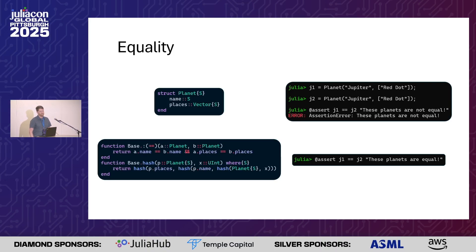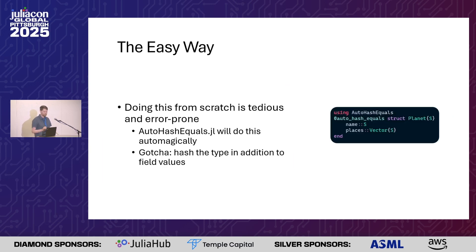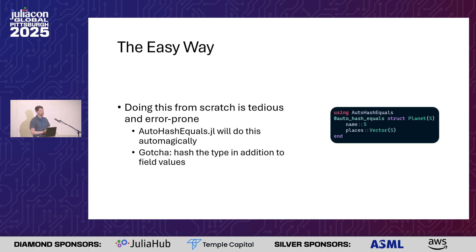On the right-hand side, we try that assertion again and see that the two different instances of this struct are equal. Worth pointing out: any time you define a custom implementation of equality, it's recommended that you also implement a custom implementation of hashing. There is a nice package called AutoHashEquals.jl which will do this for you — you just prepend the @autohash_equals macro before your struct definition and you get standard notions of equality and hashing implemented for your types.